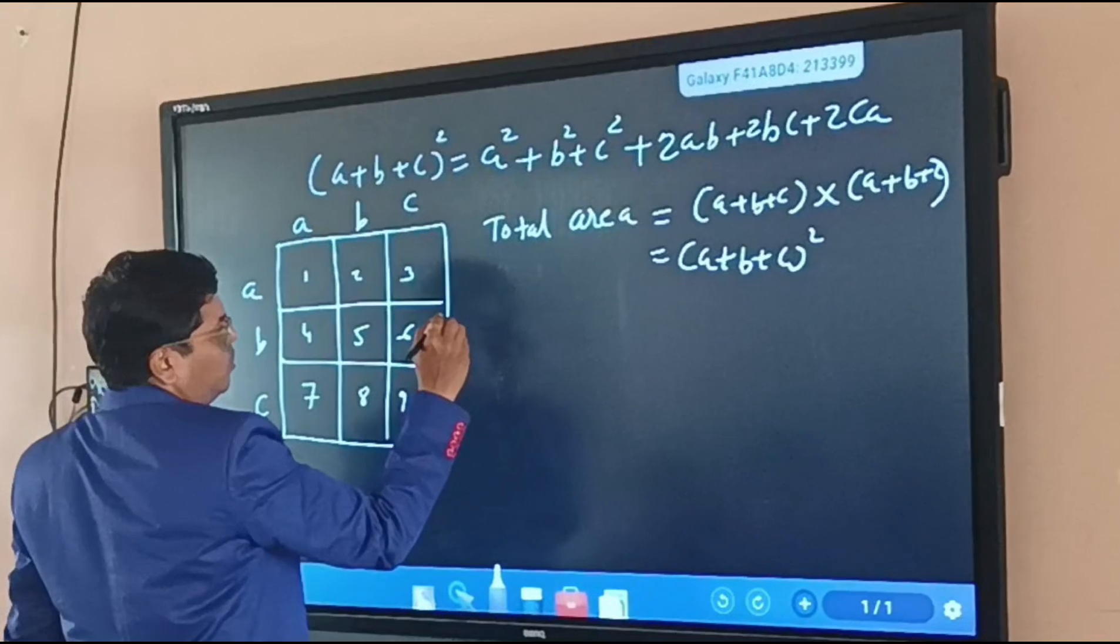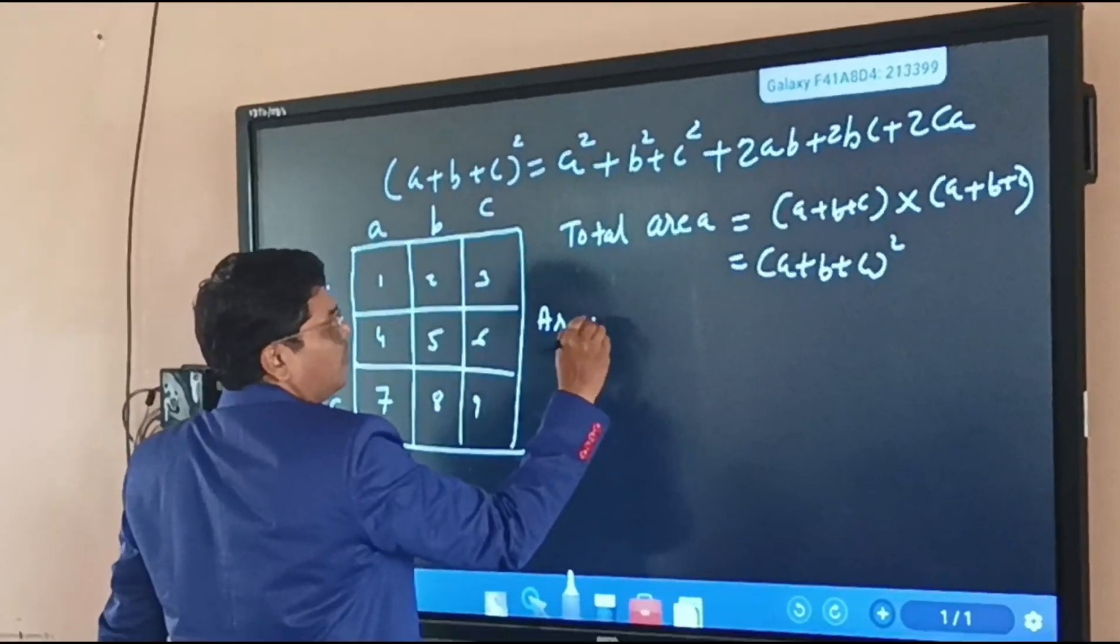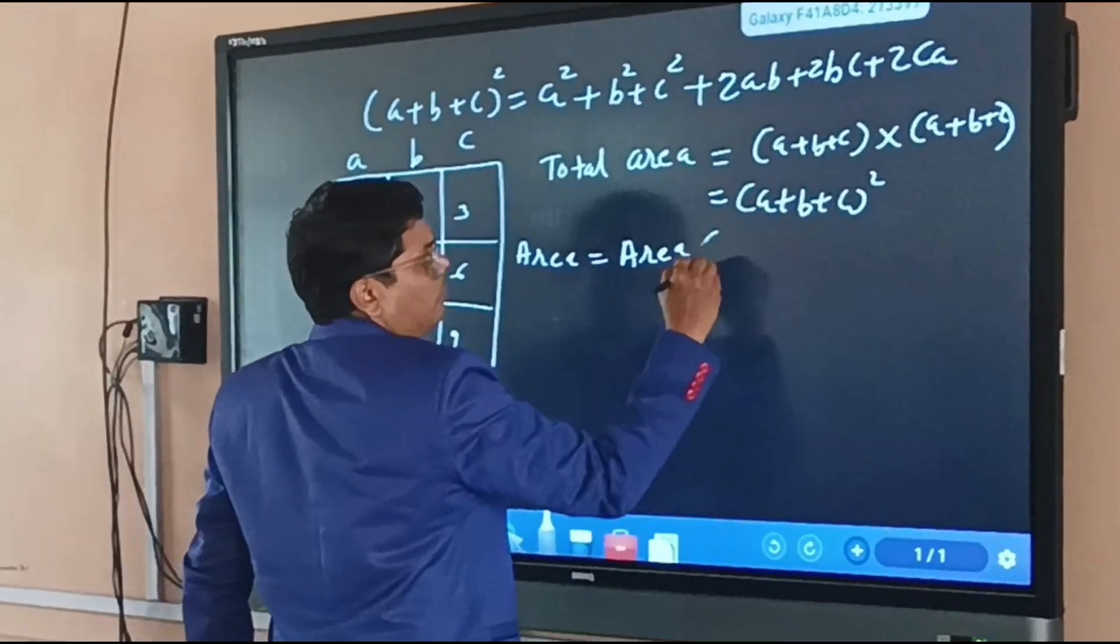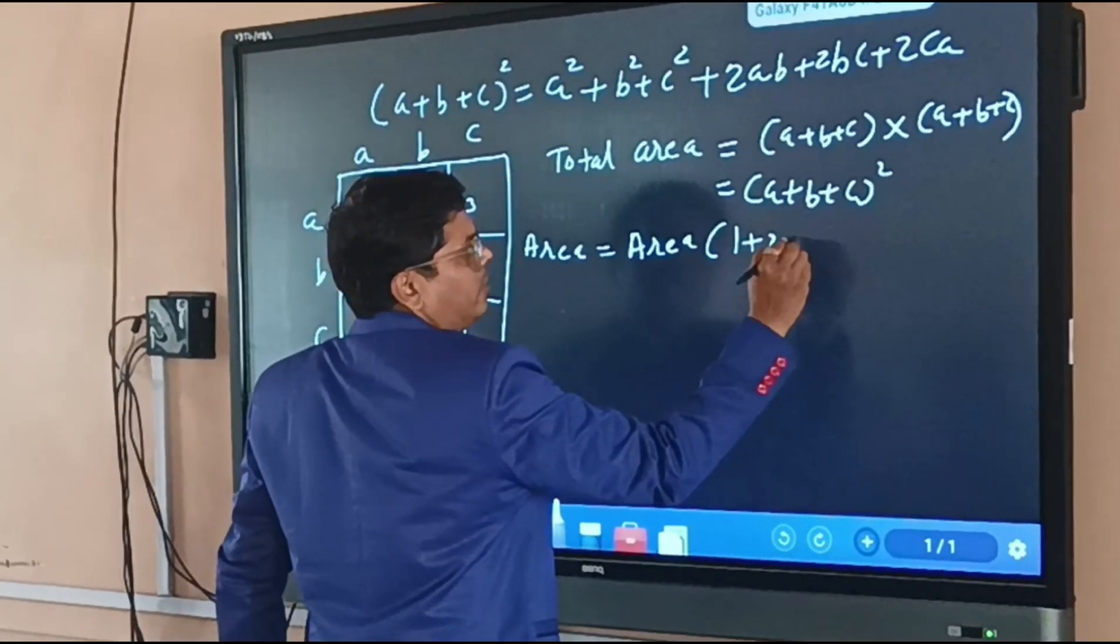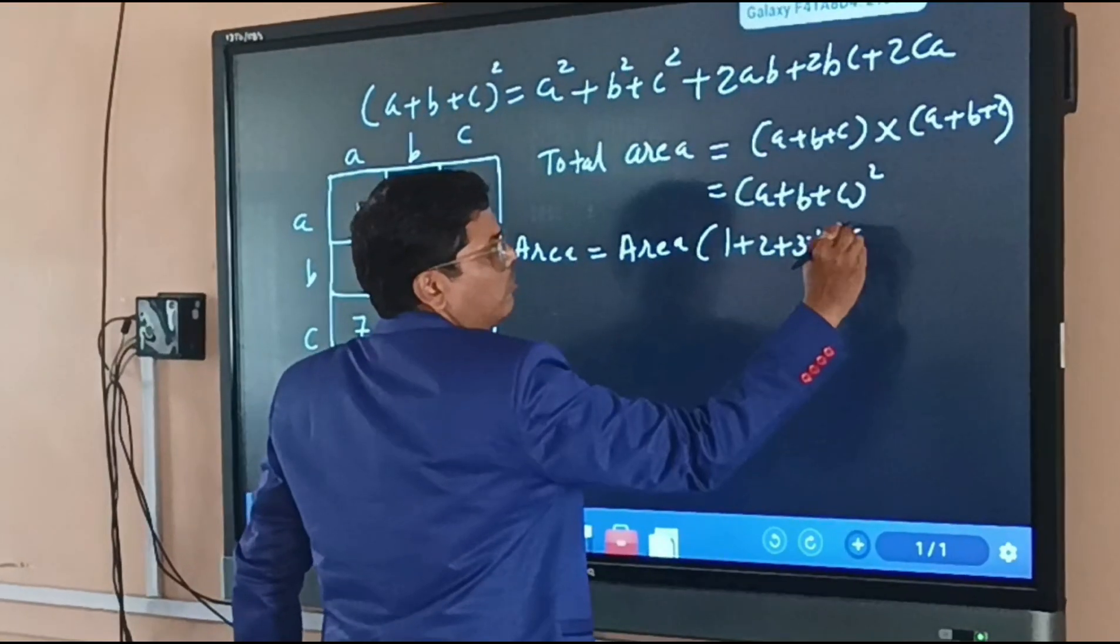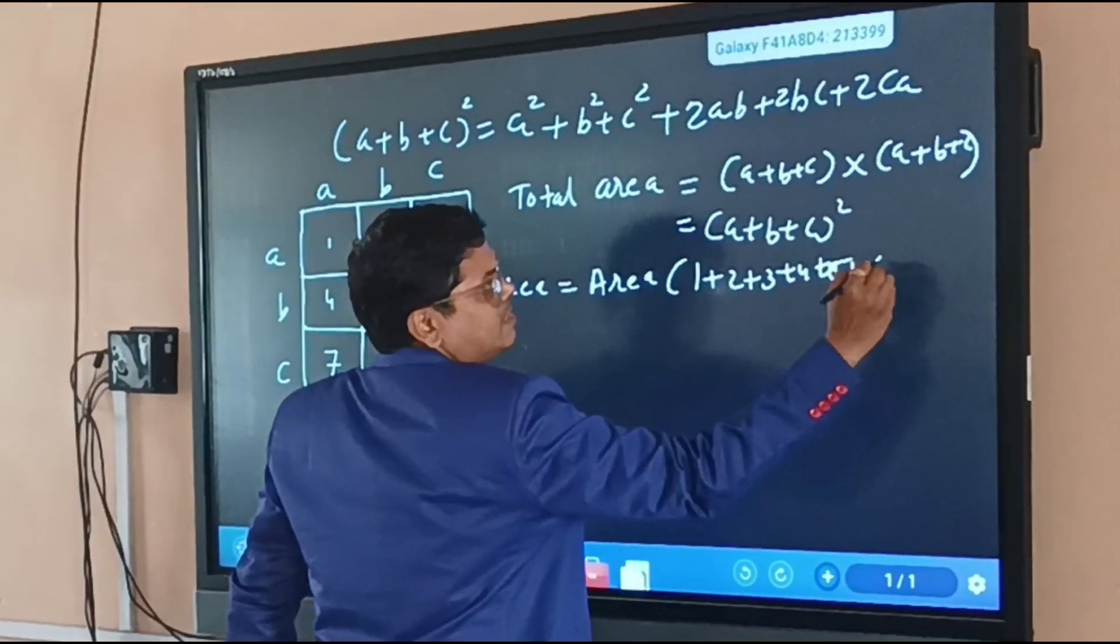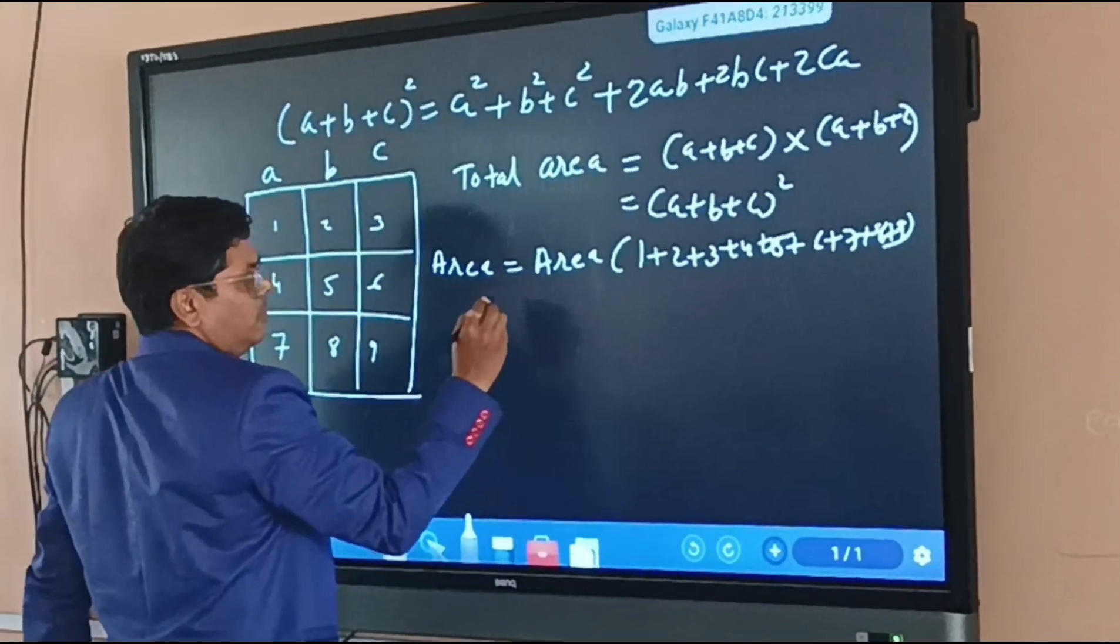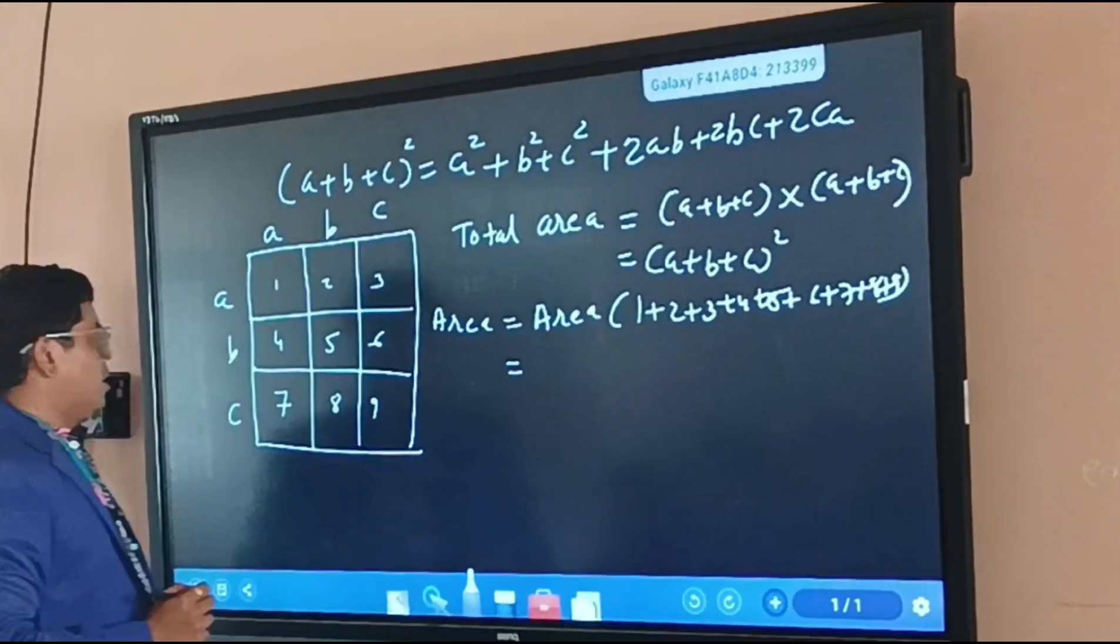Area equals area of first, second, third, fourth, five, six, seven, eight, and nine. So we will find the area of every part.